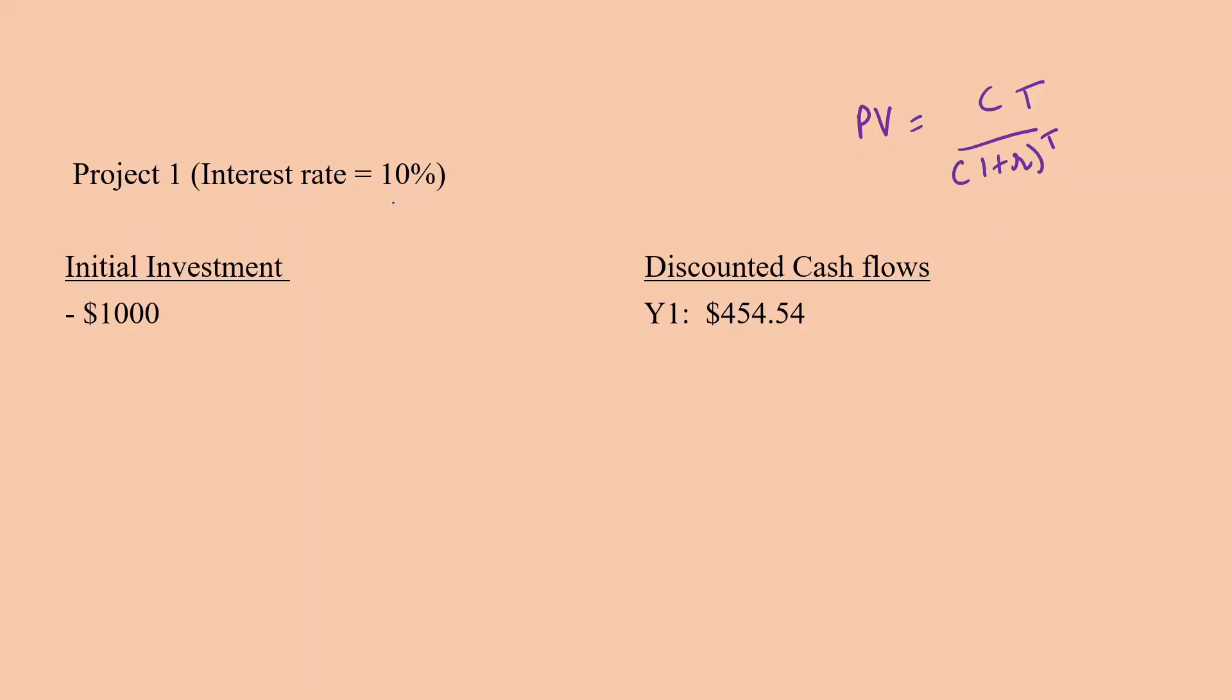The interest rate is given to be 10%. So for year one, the cash flow is $500 and the interest rate is 10%, so that is 0.1. So 1 plus 0.1 raised to the power 1, which turns out to be equal to $454.54.